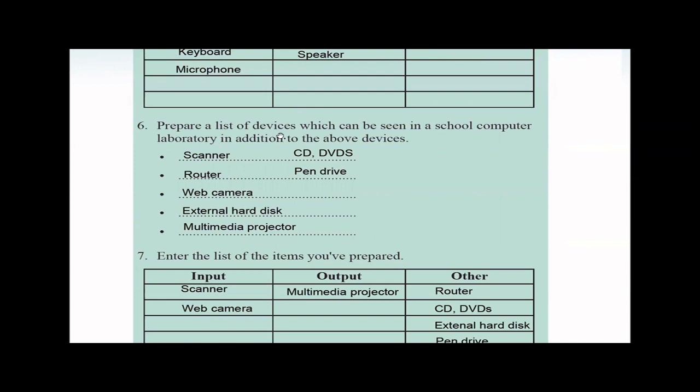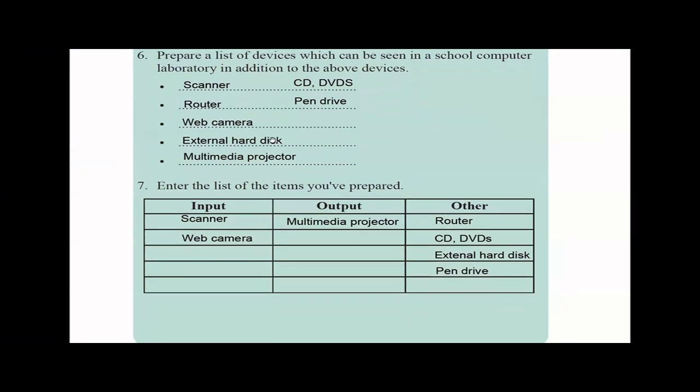Then they're asking you to prepare a list of devices that can be seen in a computer lab in addition to the above mentioned. So in your lab, recall what are the things in the lab, school lab - maybe you haven't gone to the school lab still. But anyway, in the school computer lab, you can see a scanner, right? Maybe you have a router to go to internet, switches for the internet, and sometimes a web camera can be seen, CCTV cameras can be seen, external hard disks, pen drives, CDs, DVDs, multimedia projectors. So these are few devices you can be seeing in the computer lab in a school. Then they're asking you to enter the particular list into this table structure. So what are the input devices? You have scanner and the web camera. Output devices, you have the multimedia projector. And one of the other devices, you have router, CDs, DVDs, external hard disks, pen drives.